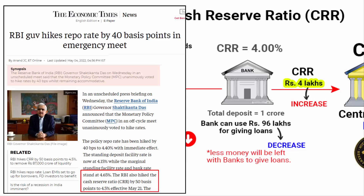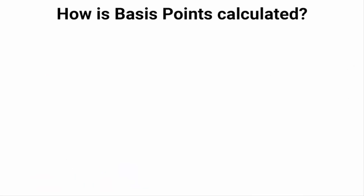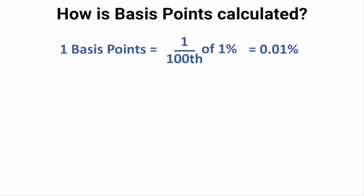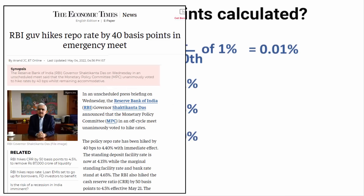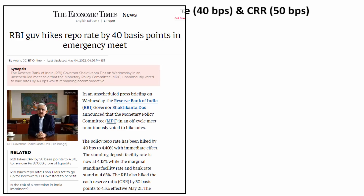By the way, basis points are calculated this way: 1 basis point equals 0.01%, so 10 basis points means 0.1%. Therefore, 50 basis points means 0.5%, and 40 basis points means 0.4%. That means RBI has increased CRR by 0.5% and the repo rate by 0.4%. Yesterday, on 4th May, as part of monetary policy, RBI increased both the repo rate and cash reserve ratio.